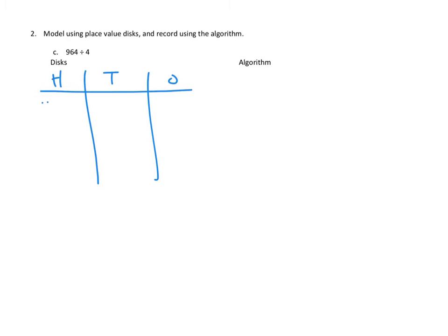So we need 9 hundreds, 6 tens, and 4 ones to represent 964 with our place value disks.